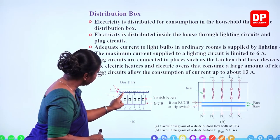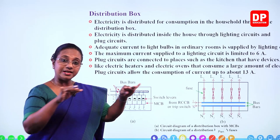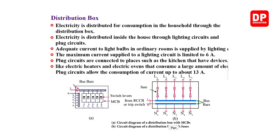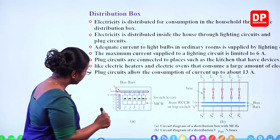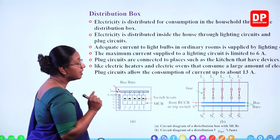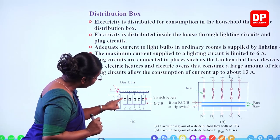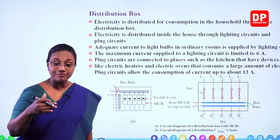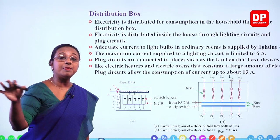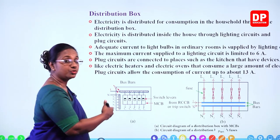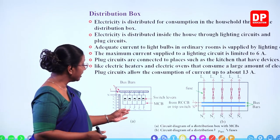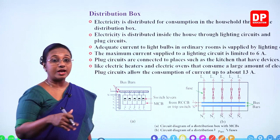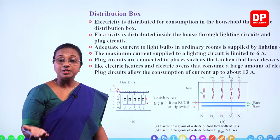From the RCCB, the live wire is connected to the bus bar. The bus bar is like a cable that supplies electricity separately to miniature circuit breakers, known as MCBs. Each component here is a miniature circuit breaker — MCB. From there you can see L1, L2, L3, L4, L5 — those are different live wire lines given to different parts of the household. L1 might go to the living room, L2 to the kitchen, L3 to the bedrooms — depending on the size of the house, you will have different numbers of MCBs.